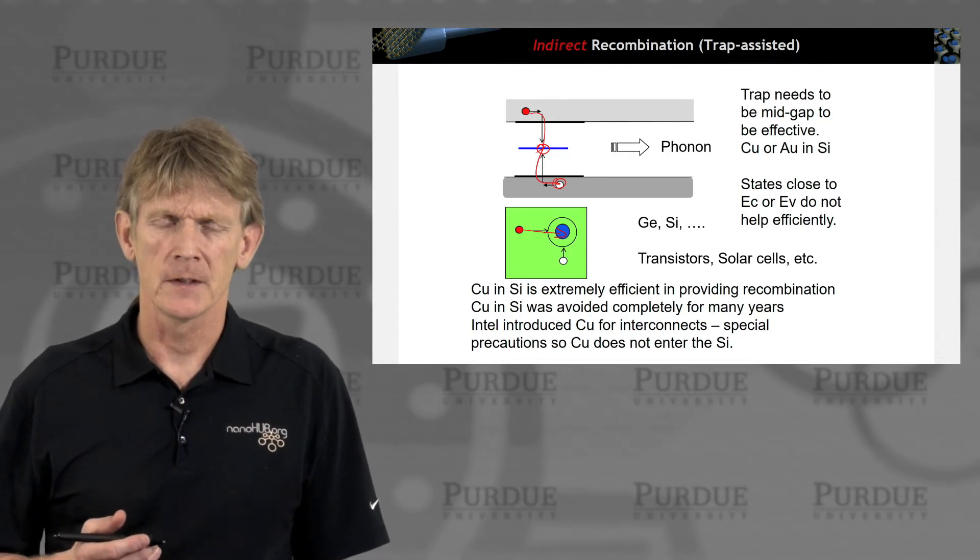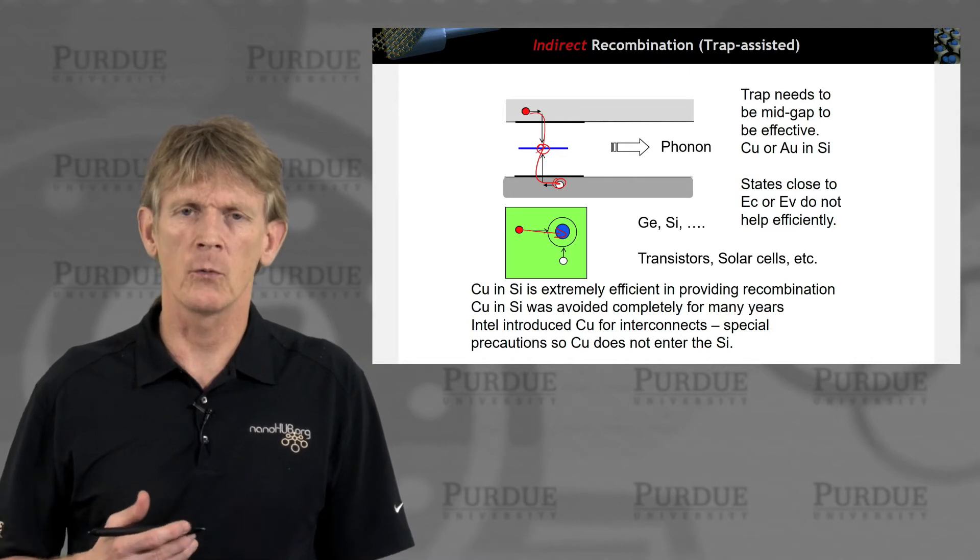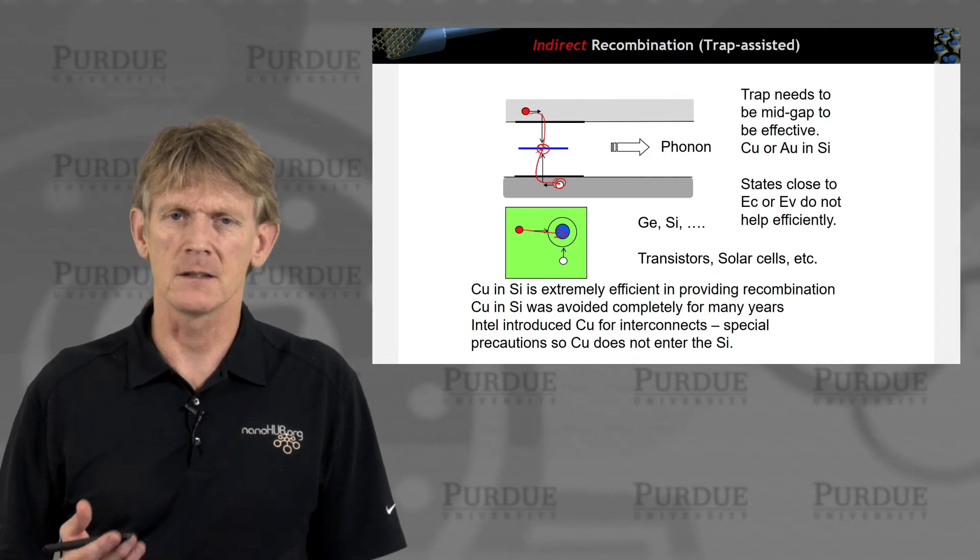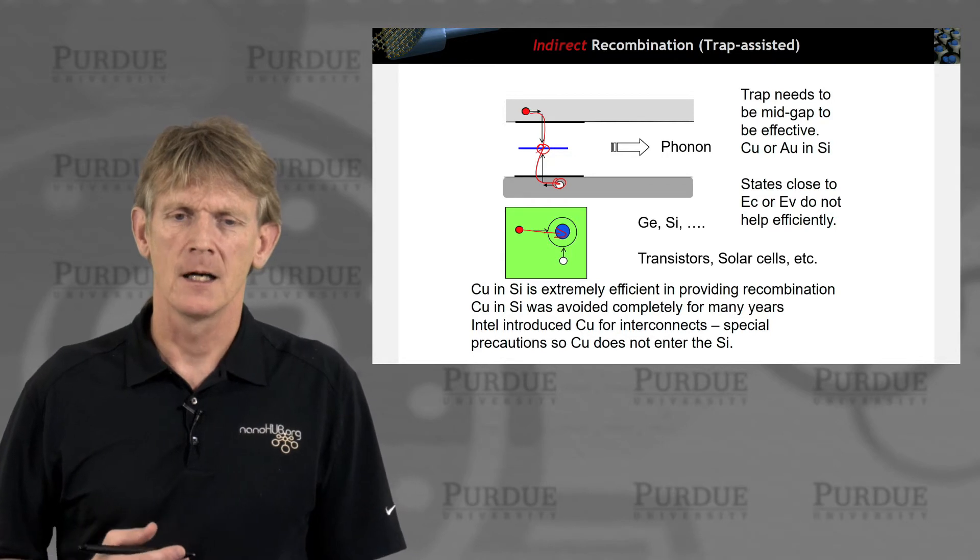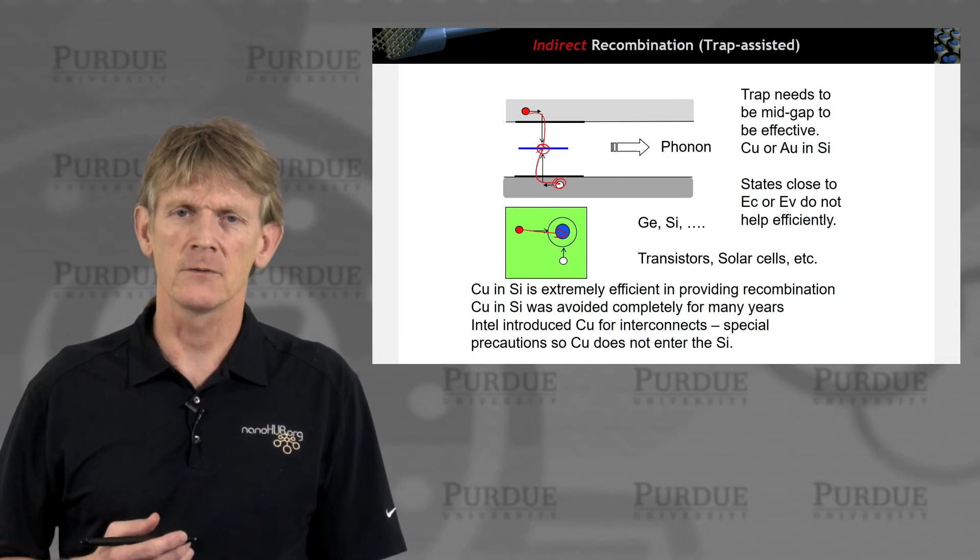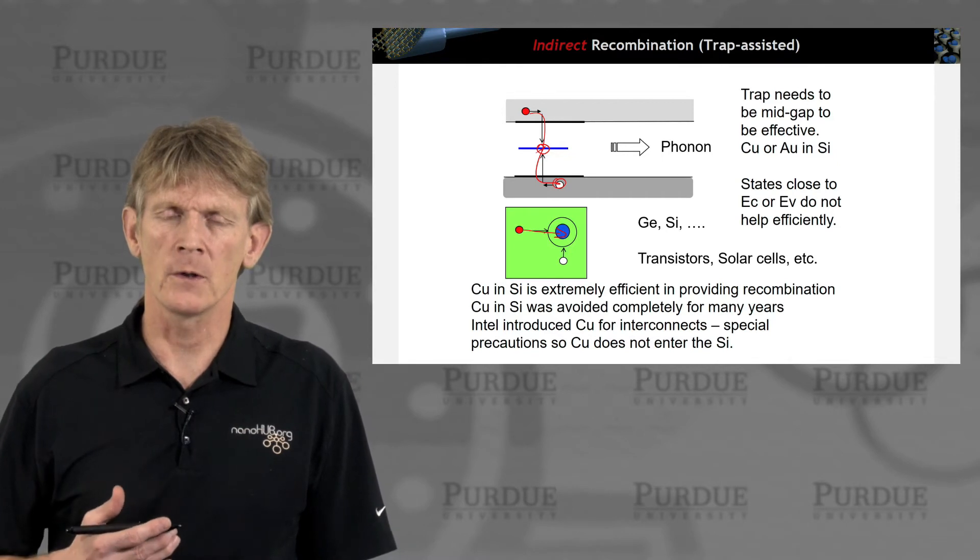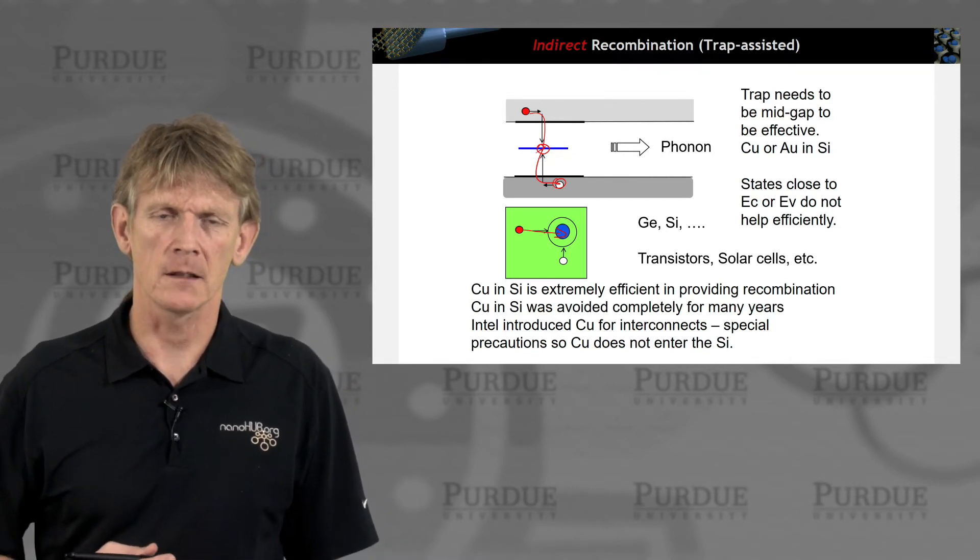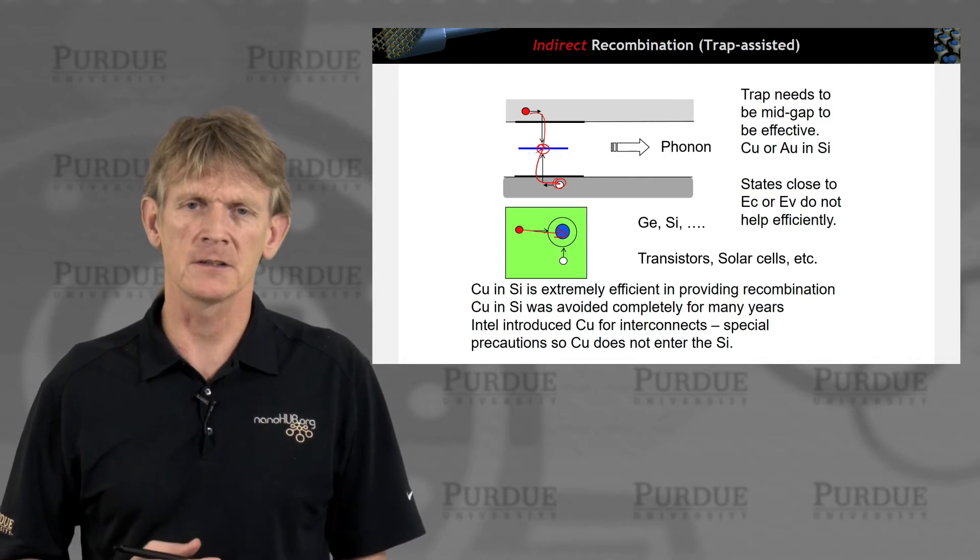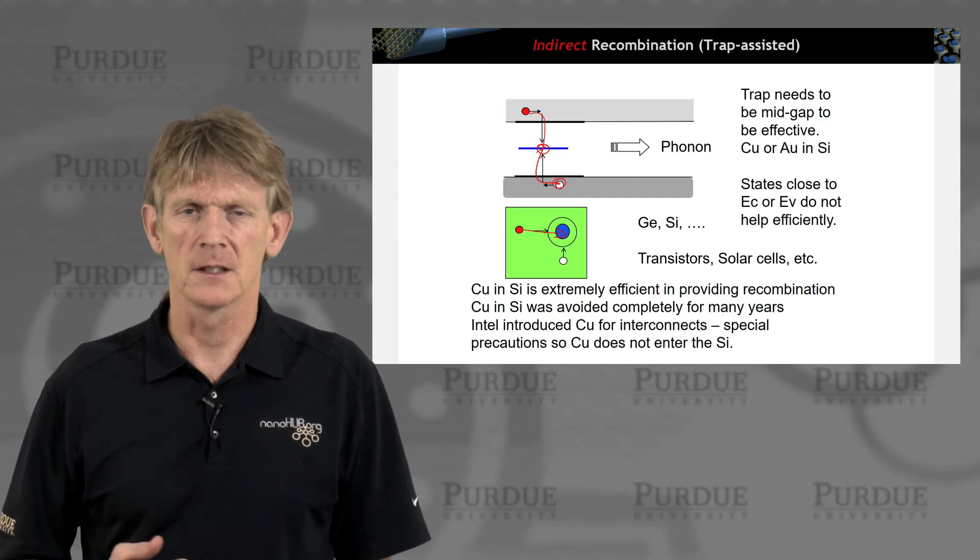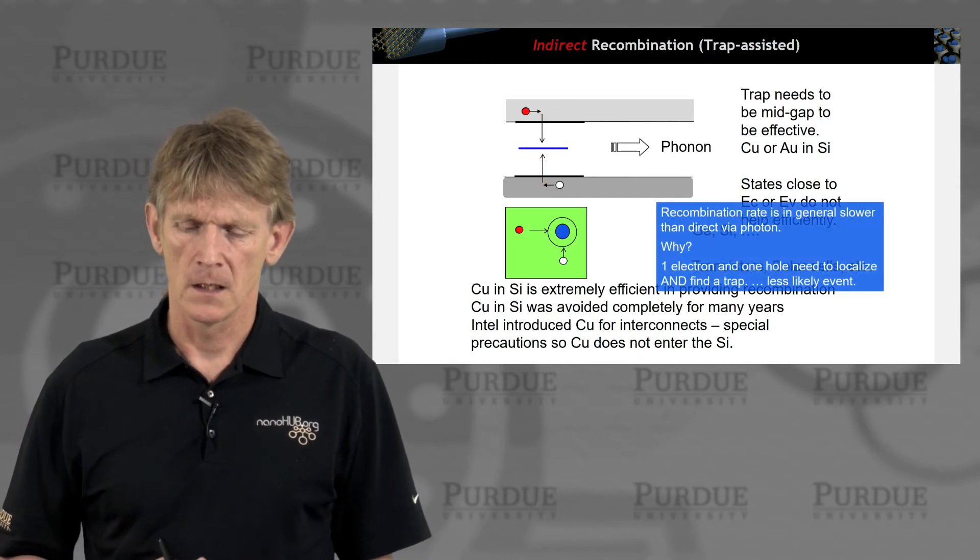Copper in silicon is an extremely efficient recombination site. So for the longest time, people kept away, kept copper away from silicon because it diffused well, and it also created these recombination sites. Now that a better interconnect was needed than aluminum or polysilicon, Intel reintroduced copper for interconnects. And it was important to get a higher conductivity metal connection into the system. But special precautions had to be taken such that copper does not get into the silicon because it's such a good recombination center.